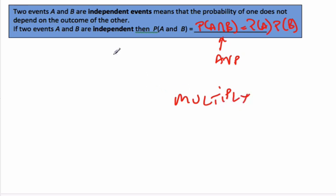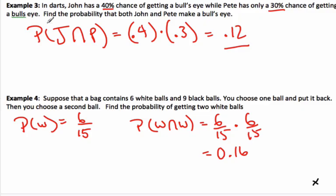So 'or' often means adding and 'and' often means multiplying. They're not absolute rules, but they're often really good rules to think about. And there we have the idea of mutually exclusive and independent events.